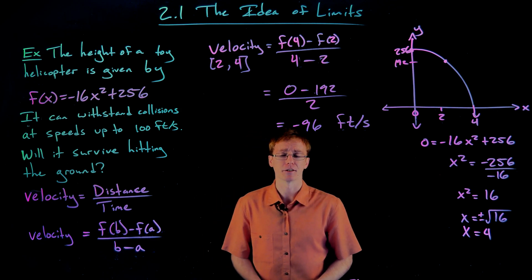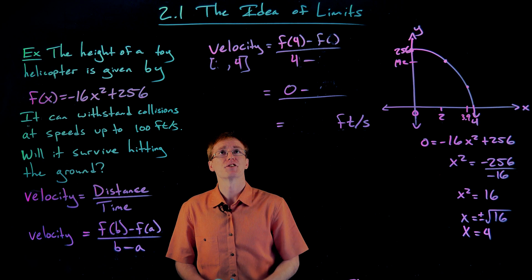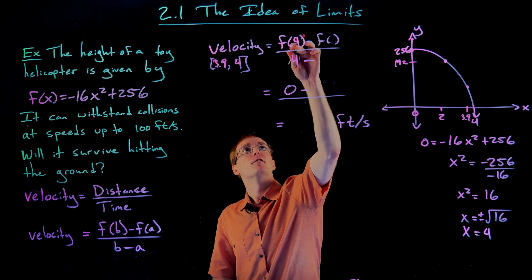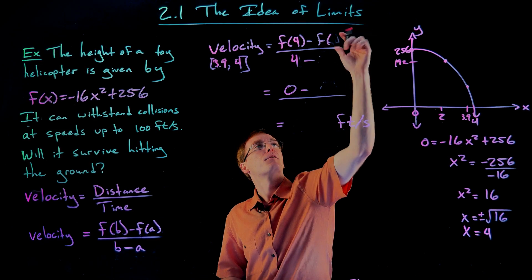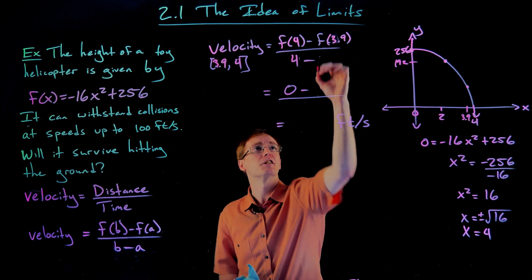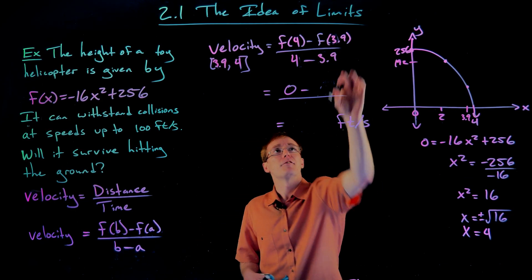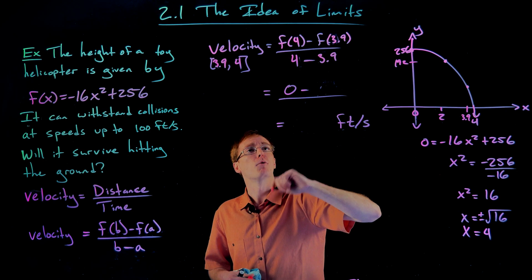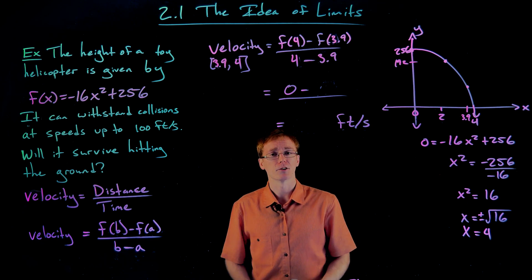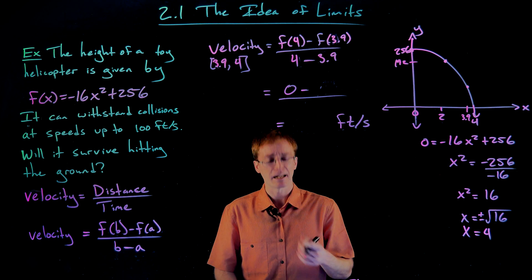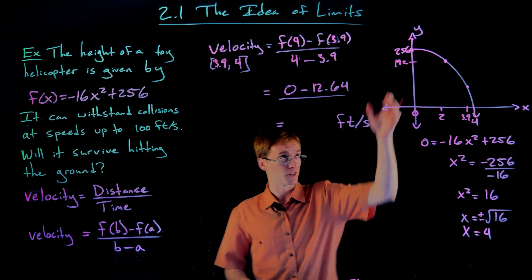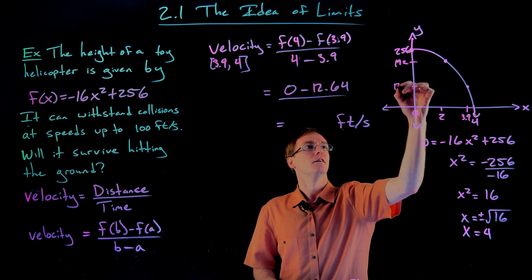This time we go from 3.9 seconds to four seconds. F of four minus f of 3.9 over four minus 3.9. F of four is zero. F of 3.9 requires a calculator: plugging 3.9 into our function gives an output of 12.64. So 3.9 seconds after the object started falling, it's at a height of 12.64 feet. The denominator is four minus 3.9, which equals 0.1.